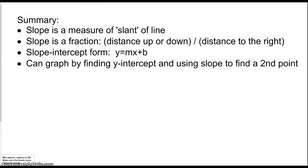Summary: Slope is a measure of the slant of a line. Larger numbers mean more slanted; 0 means horizontal. Positive slopes go from lower left to upper right; negative slopes go downward. Slope-intercept form is y equals mx plus b, where m is the slope and b is the y-intercept y-coordinate. To graph, find the y-intercept first, then use the slope to go up or down and over to find a second point. There are plenty of practice problems available to practice these concepts.